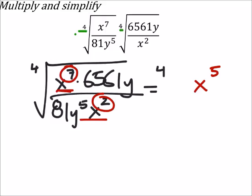And yes, this is all the fourth root of whatever this is going to be. Now let's look at the number. I've got 6561 divided by 81, which I believe is 81.